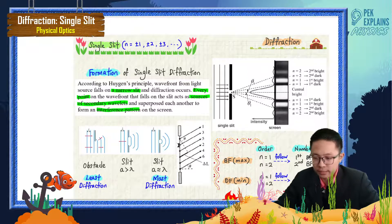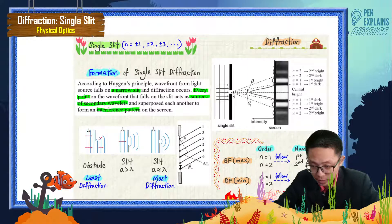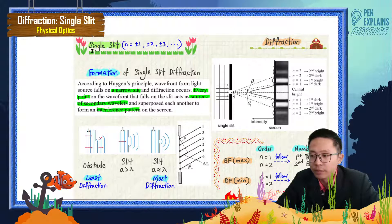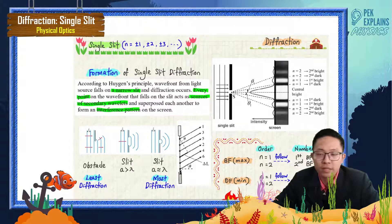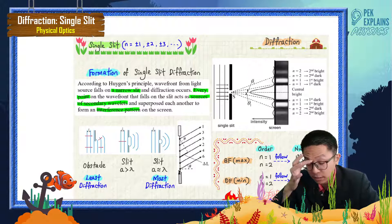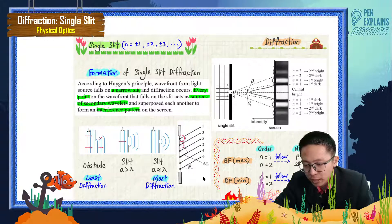So, this is the single slit — just one slit. The wavefront that falls onto the slit — each point on the wavefront becomes the source of a secondary wavelet. As you can see here, there are 1, 2, 3, 4, 5, 6 points. But actually there are countless points here, not just 6. These 6 points are just representative. So, each point on this wavefront produces a secondary wavelet.